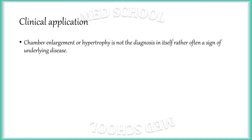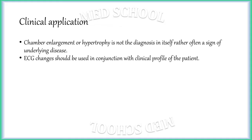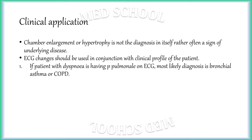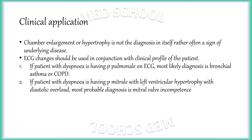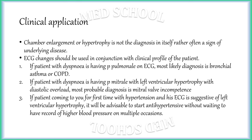Chamber enlargement or hypertrophy is not a diagnosis in itself but rather often a sign of an underlying disease. ECG changes should be used in conjunction with the clinical profile of the patient. For example, if a patient with dyspnea has P pulmonale on ECG, the most likely diagnosis is bronchial asthma or COPD. If a patient with dyspnea has P mitrale with LVH with diastolic overload, the most probable diagnosis is mitral valve incompetence. If a patient presenting for the first time with hypertension has an ECG suggesting LVH, it is advisable to start antihypertensives without waiting for records of higher blood pressure on multiple occasions.